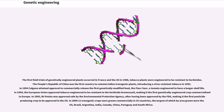In 2009-11, transgenic crops were grown commercially in 25 countries, the largest of which by area grown were the US, Brazil, Argentina, India, Canada, China, Paraguay, and South Africa.